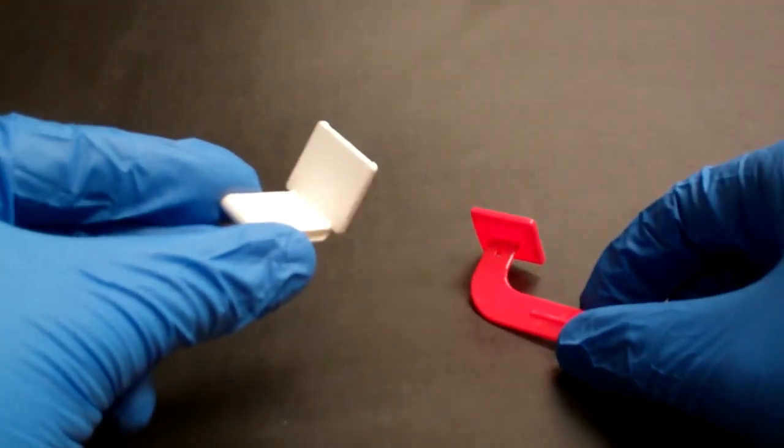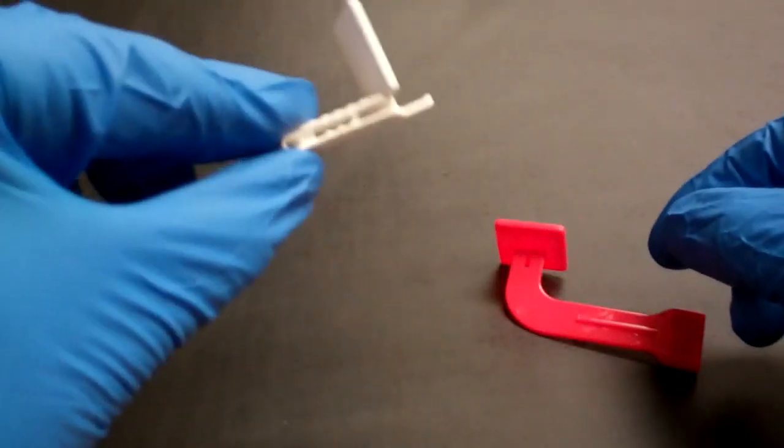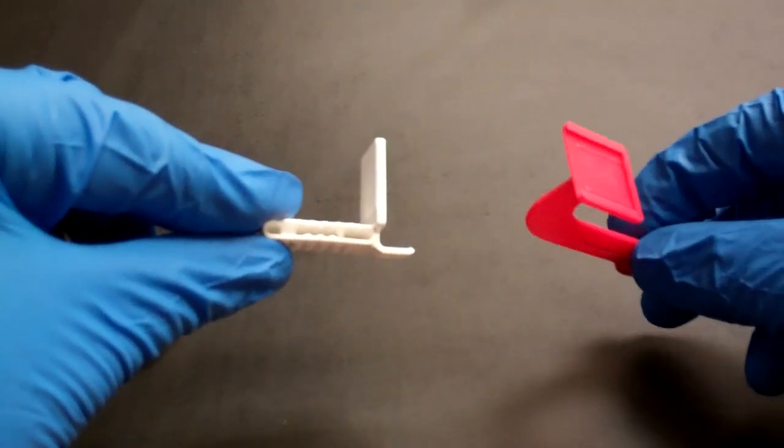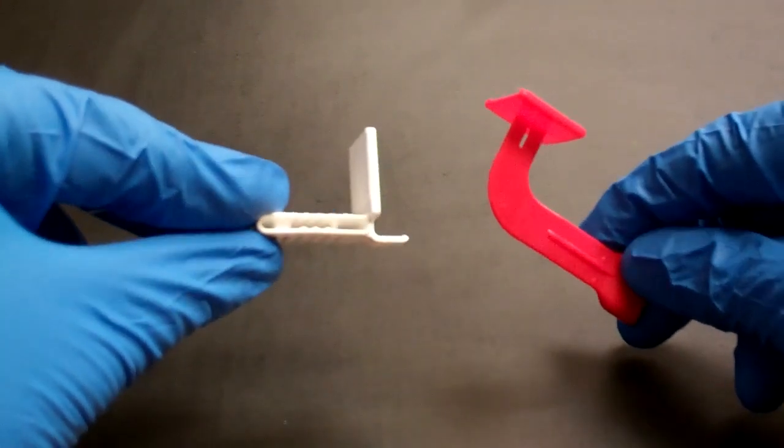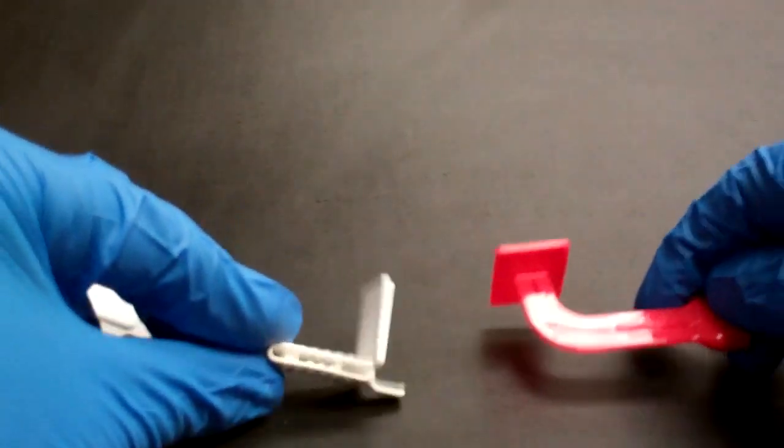One is used for periapicals, and the other for bite wings. Each bite piece can be used for either horizontal or vertical bite wings or periapicals, and I'll show you how that works.